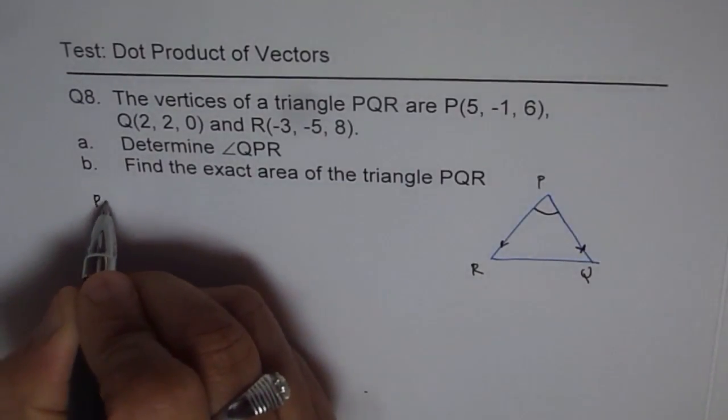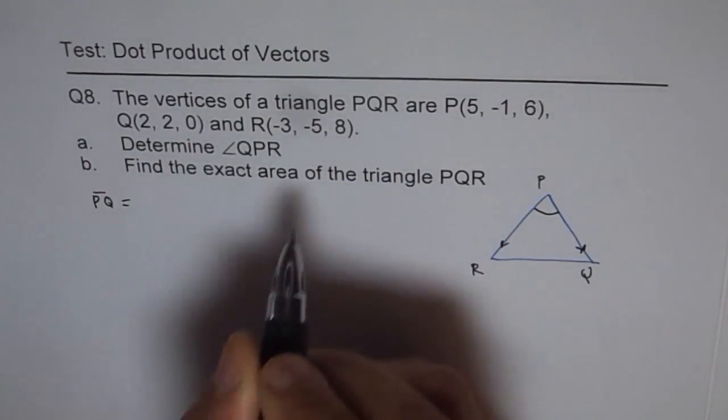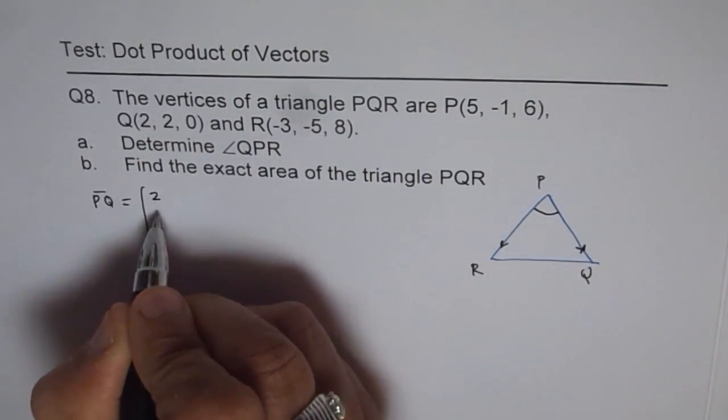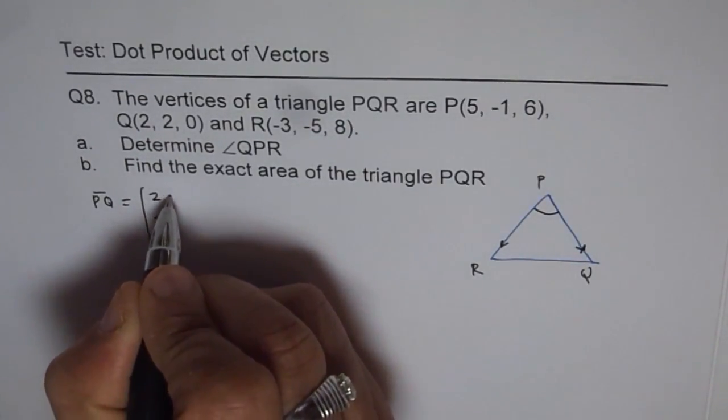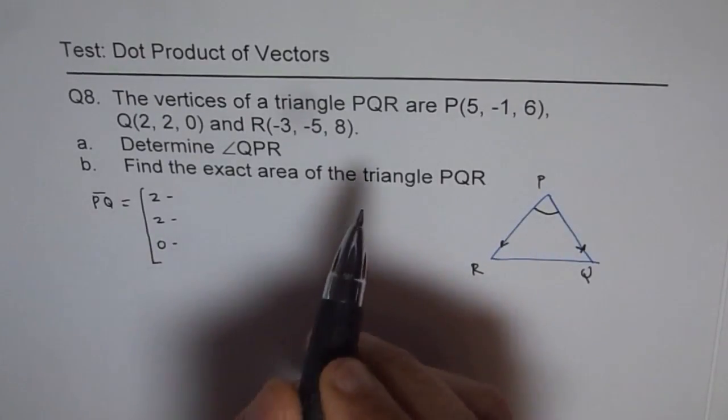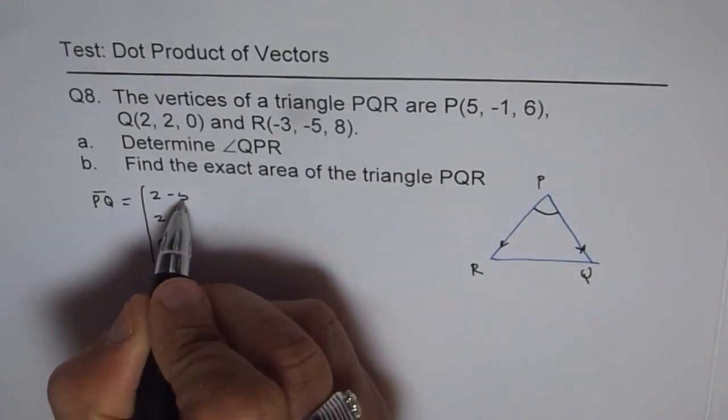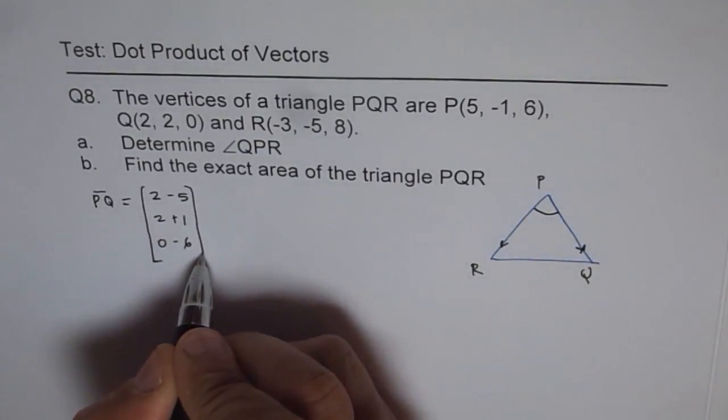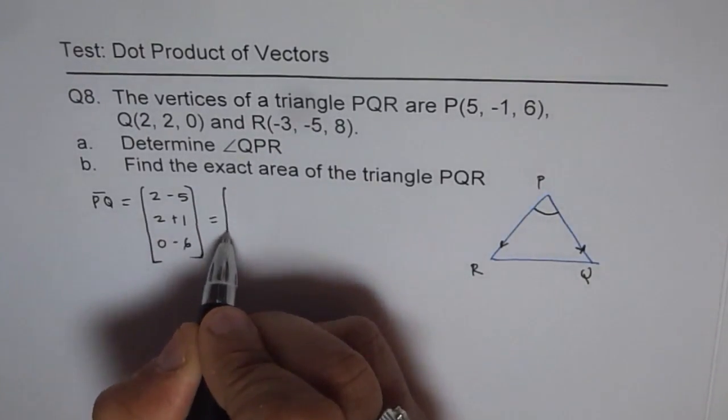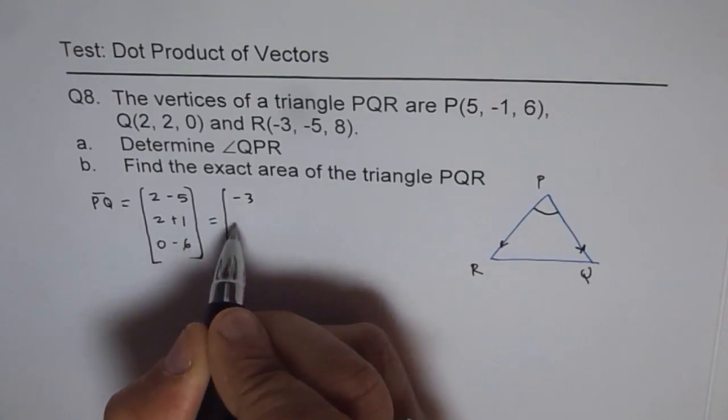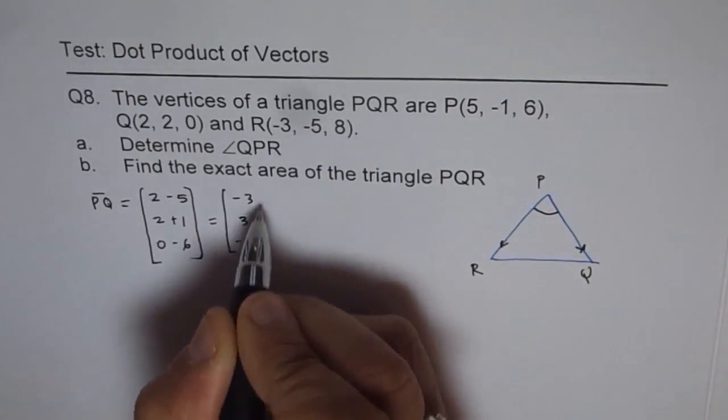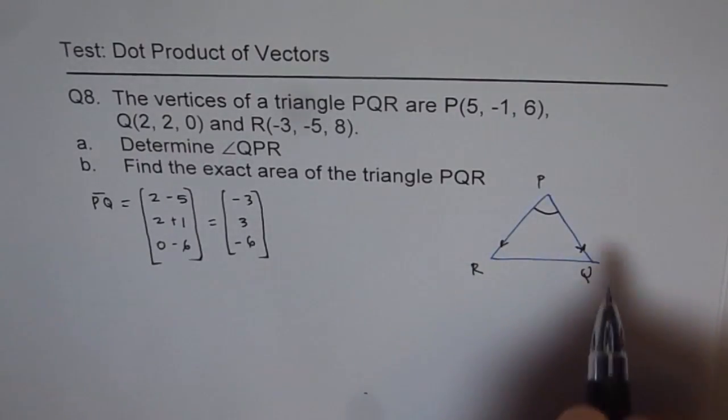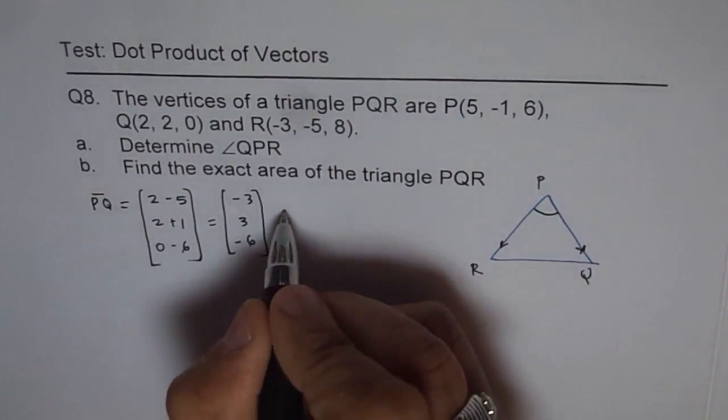What is vector PQ? PQ equals Q minus P. So (2, 2, 0) minus P which is (5, -1, 6), which is (-3, 3, -6). That is PQ.